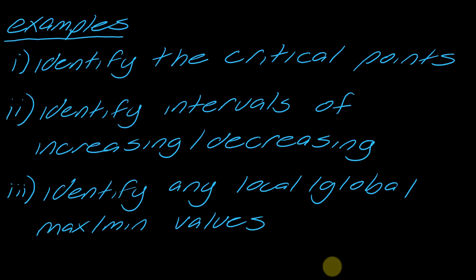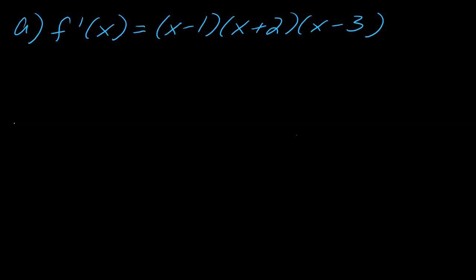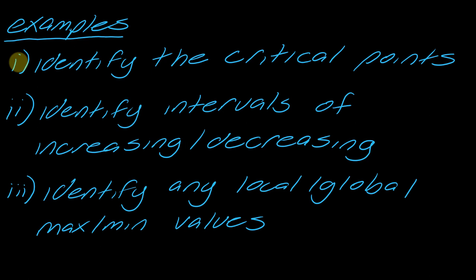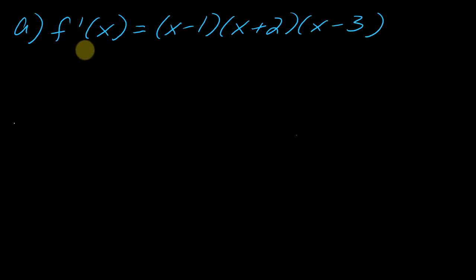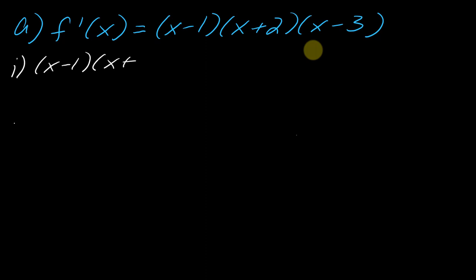Now let's jump into some examples. There are three things I want to do: first, identify the critical points; second, identify the intervals of increasing and decreasing; and third, identify any local or global maximum or minimum values. In this first example, I'm given f prime of x directly. Since it's a polynomial, the domain is all real numbers, so there are no points where this is undefined. I just have to figure out where it equals zero by setting the whole thing equal to zero. Since it's already factored, I can easily solve to find my three critical points.